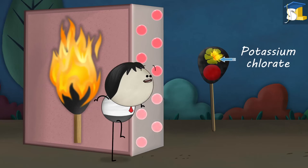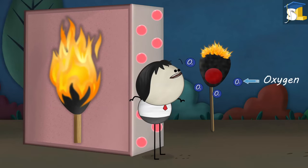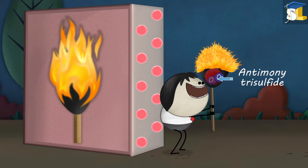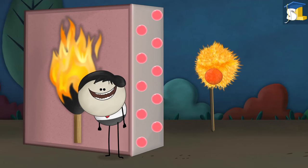The heat produced breaks down the potassium chlorate present in the match head, releasing more oxygen. This oxygen combines with antimony trisulfide which is also in the match head and keeps the flame burning.